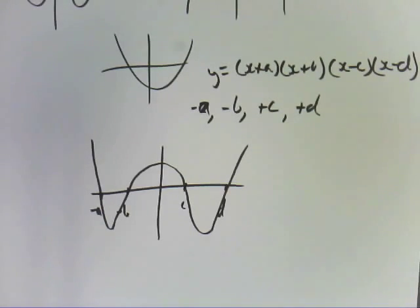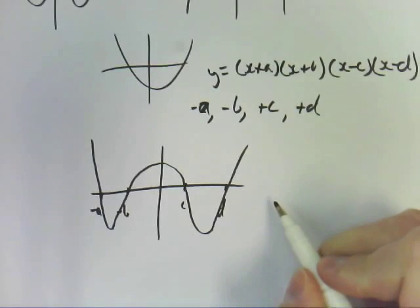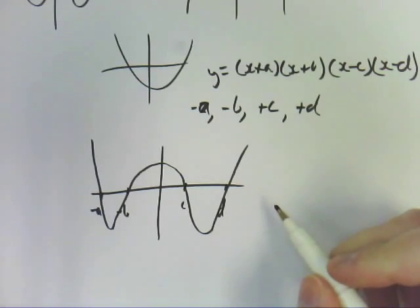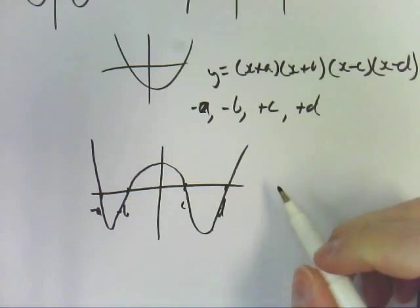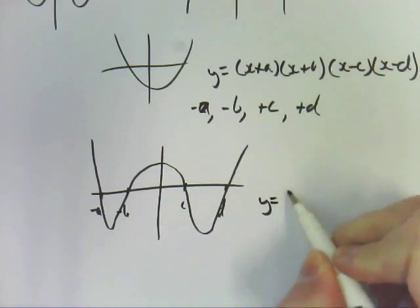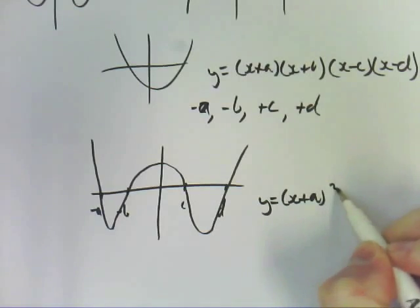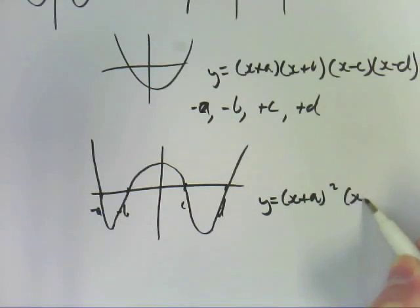Now, if you have a factor squared like it was in the cubic ones, if it's squared, it means it touches at that point. So if we have y equals x plus a squared, x plus b, x minus c.